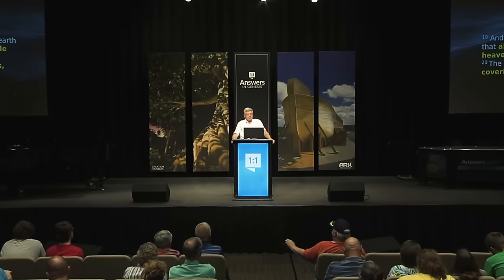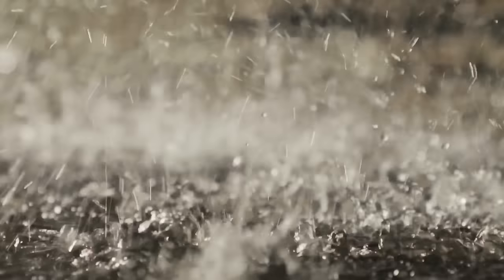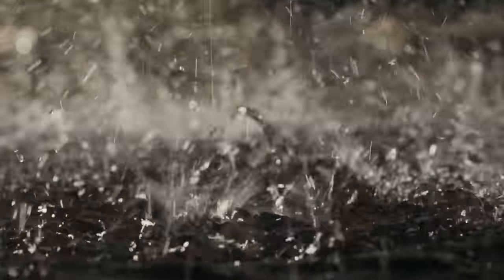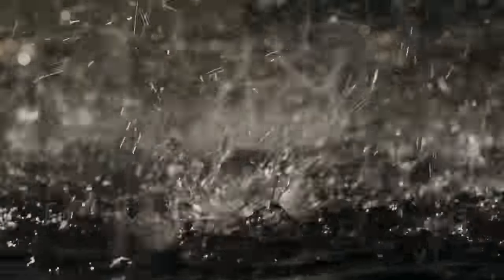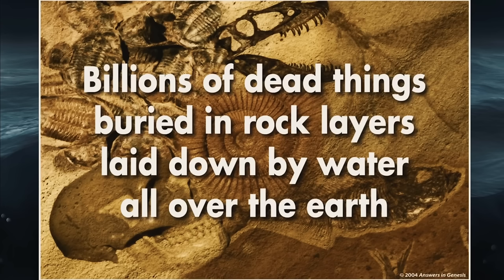Genesis 7 reads: the waters prevailed so mightily on the earth that all the high mountains under the whole heaven were covered. The next time someone says there's no evidence for the flood, read them what Genesis says and ask: if that is true, what evidence would you look for? All flesh died. Wouldn't you expect to find billions of dead things buried in rock layers laid down all over the earth? That's exactly what we find — 70% of the earth is covered in fossil-bearing sedimentary rocks laid down by water.